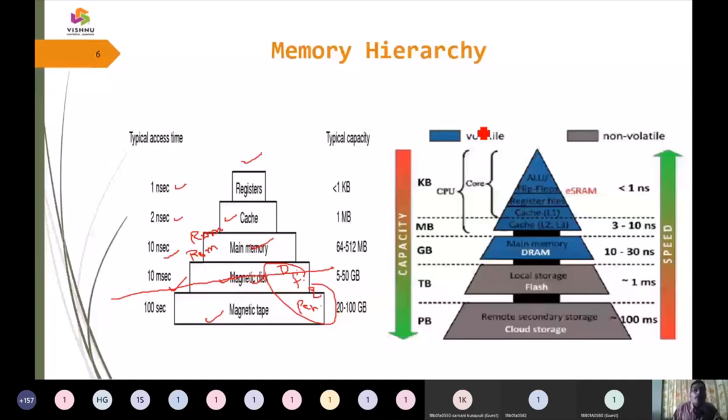Then we are talking about random access memory. So random access memory is going to be... So non volatile. So if we are going to save...